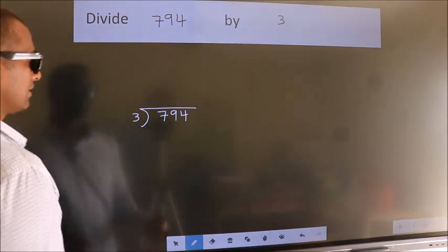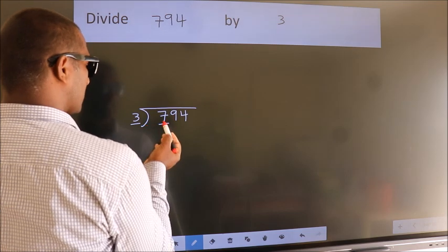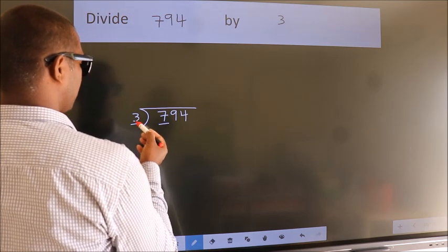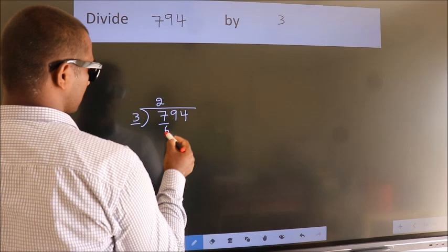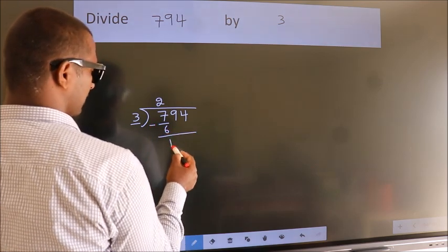Next, here we have 7. Here 3. A number close to 7 in the 3 table is 3 times 2 is 6. Now we should subtract. We get 1.